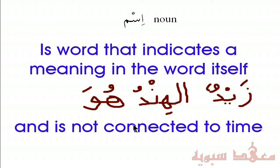The second part of the definition is: and is not connected to time. This second part is used to differentiate it from the verb, because the verb is connected to time. The ism is not connected to time. So if we said Zaydun, or Al-Hind, or hua, it doesn't indicate any time frame — past, present, or future. This is the characteristic of the ism, or the noun.